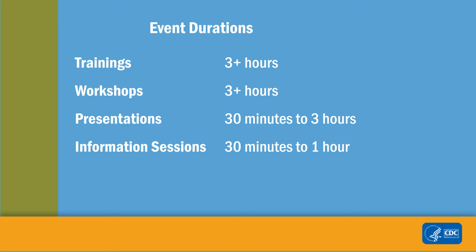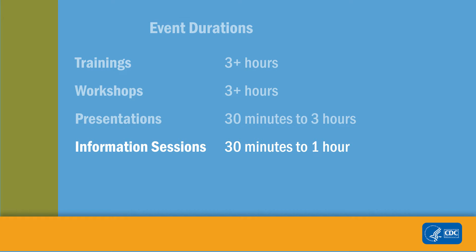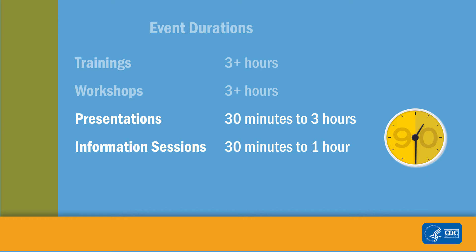Webinars are typically shorter than workshops or in-person training. Here is a list of types of professional development events and their typical duration times. Trainings and workshops are typically 3-plus hours in order for effective knowledge and skill transfer to occur. Presentations may last 30 minutes up to 3 hours, and information sessions can be anywhere from 30 minutes to 1 hour. Webinars usually fall into the categories of presentations or information sessions; therefore, ideal duration is 90 minutes or less.